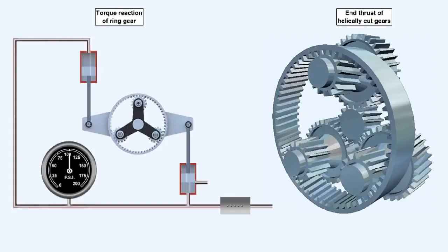There are two types of hydraulic torque meter system, one which utilizes the end thrust generated by a helically cut gear, the other employs the torque reaction of a ring gear. They're both used to alter the oil pressure of the torque transmission system, which is then transmitted to the torque meter gauge on the instrument panel. This simplified diagram shows a ring gear system.